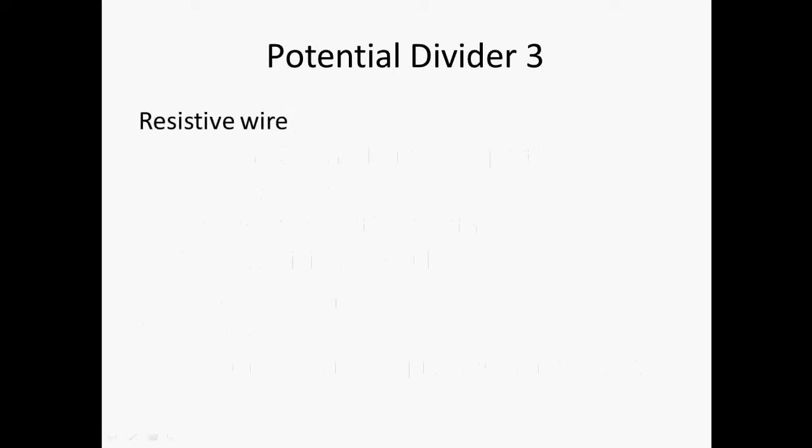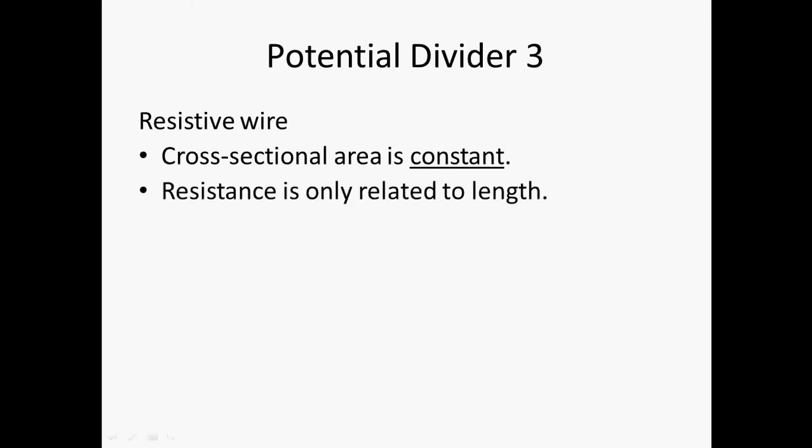Let us recap. What is a resistive wire? How do we consider it in potential divider? A resistive wire, in this case, we have to consider that the cross-sectional area is constant. If it is constant, the only other factor that is affecting the resistance will be the length, so the resistance is only related to the length.